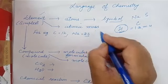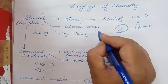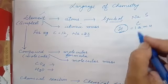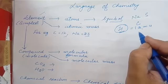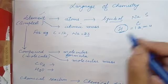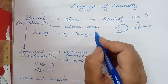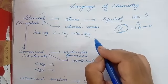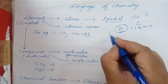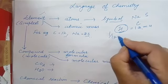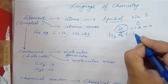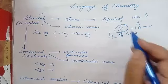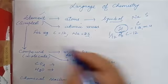Now this atomic mass is also taken as a comparison to the carbon atom. But carbon is already 12 times heavier than hydrogen. So what we are taking is: if it is sodium, it is 23 times heavier than one-twelfth of carbon-12, because carbon is already 12 times heavier than hydrogen.